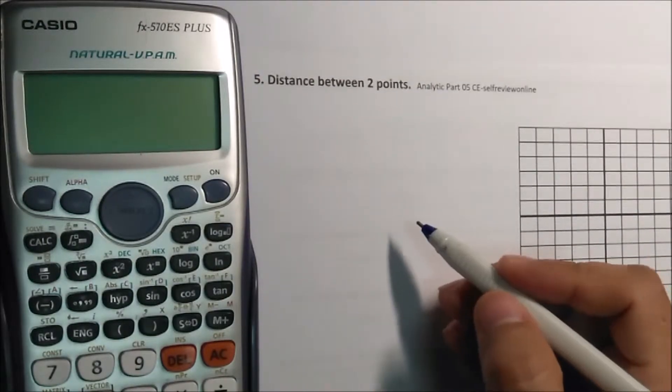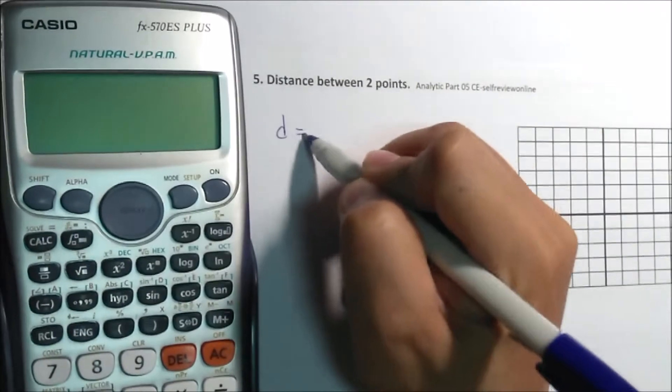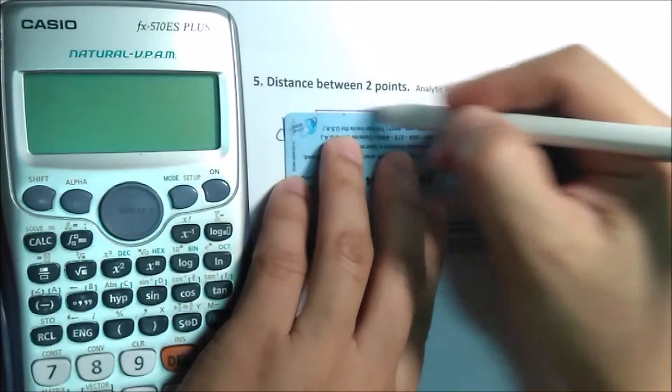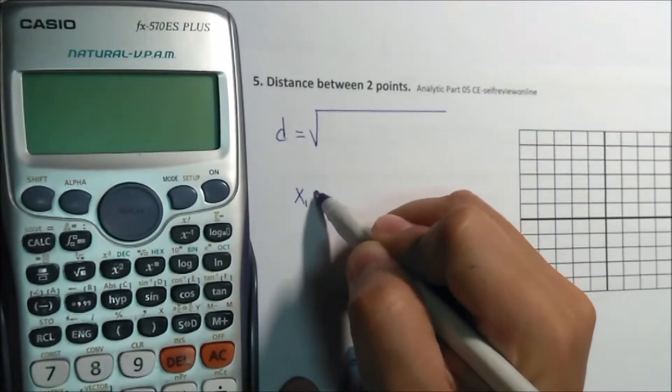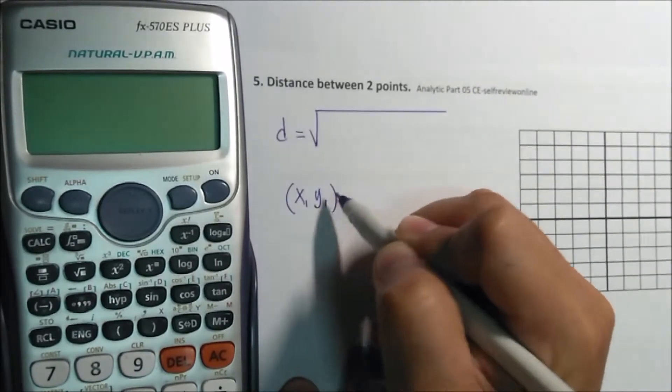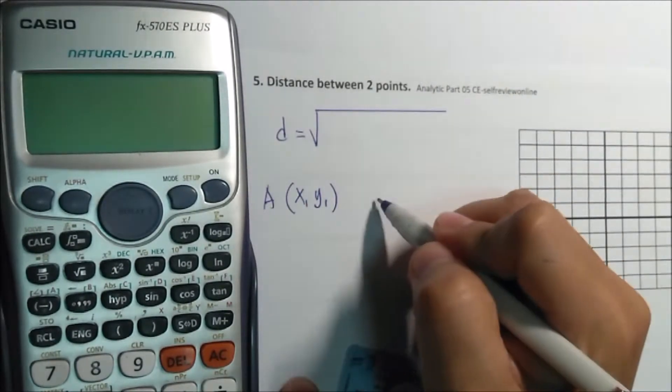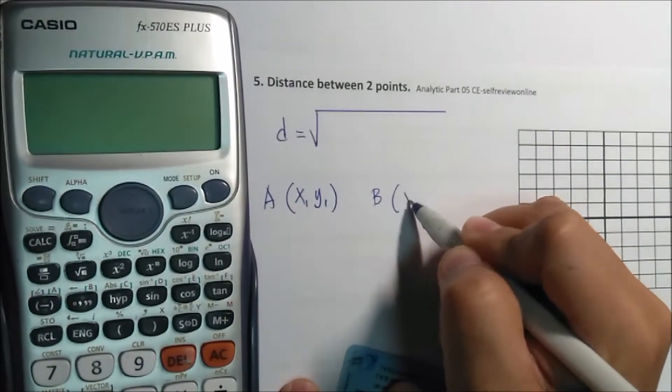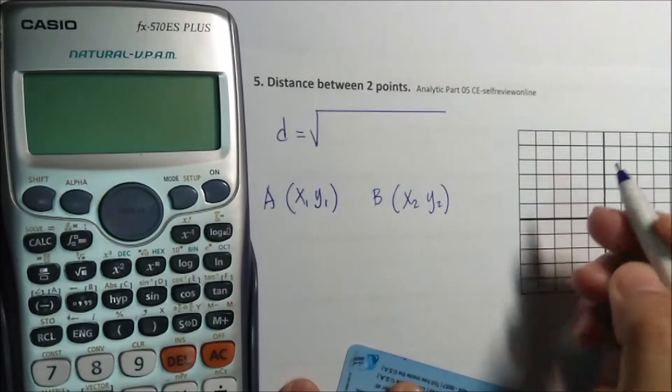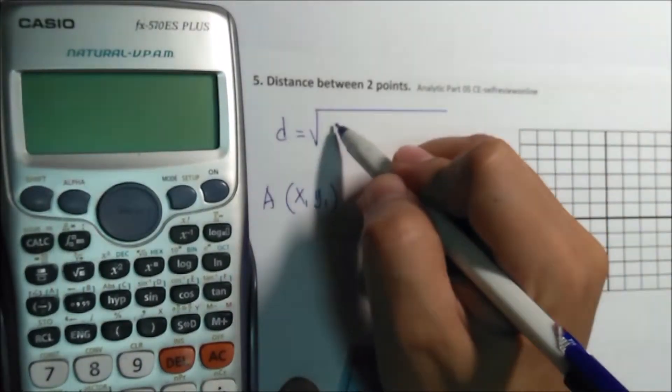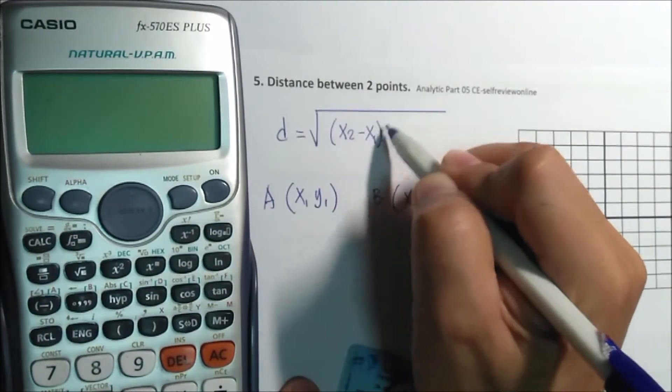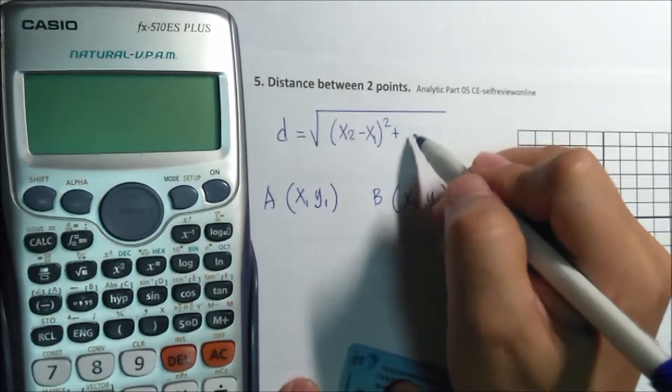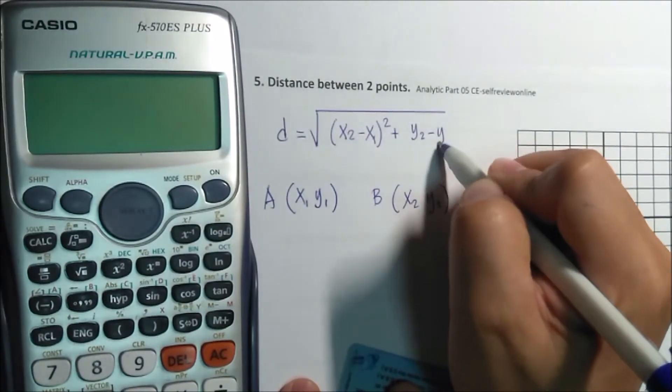The formula is we have the square root of... Given x1, y1, point A and point B with coordinates x2, y2 also. The distance between them is x2 minus x1 squared plus y2 minus y1 squared.